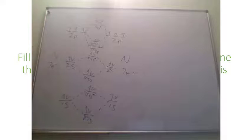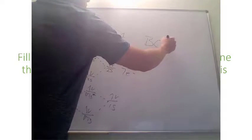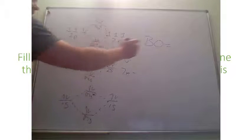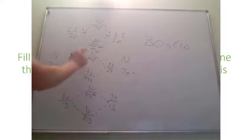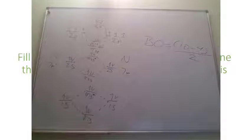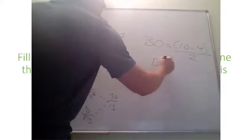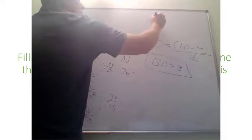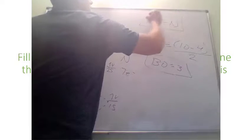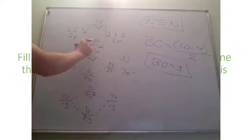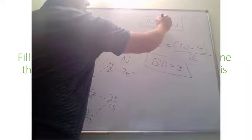With all electrons filled, we determine the bond order: bonding electrons minus antibonding electrons divided by 2. We have 10 electrons in bonding orbitals and 4 electrons in antibonding orbitals. So 10 minus 4 is 6, divided by 2 gives a bond order of 3 — a whole number, indicating a triple bond between the two nitrogens. That triple bond consists of one sigma bond and two pi bonds.